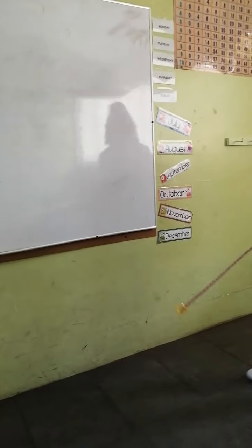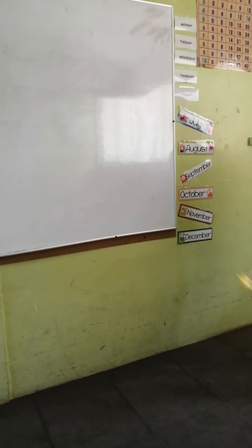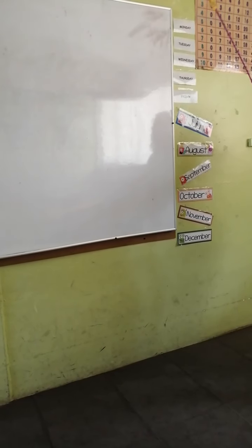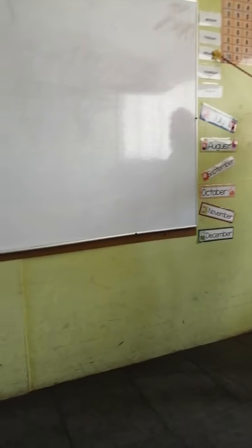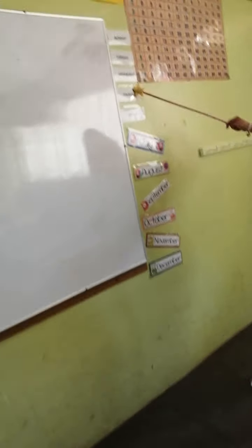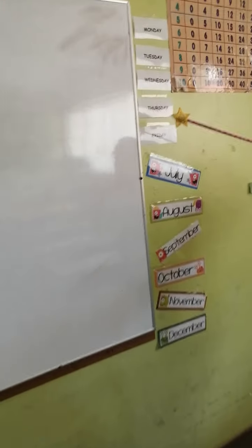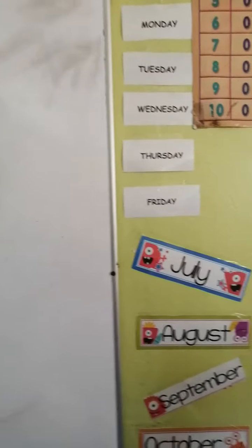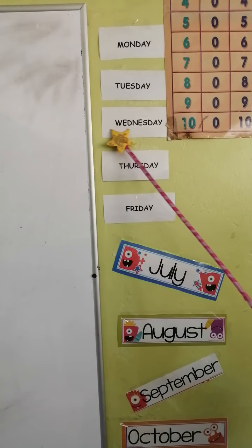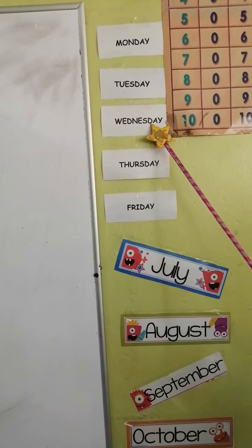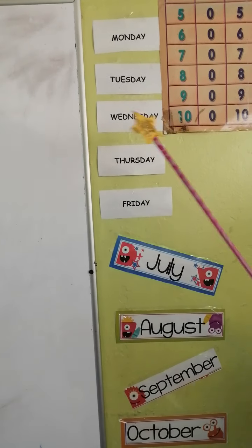Okay, everybody at home: Monday, Tuesday, Wednesday, Thursday, Friday, Saturday and Sunday. What day is today, kids? Yes, today is Wednesday.